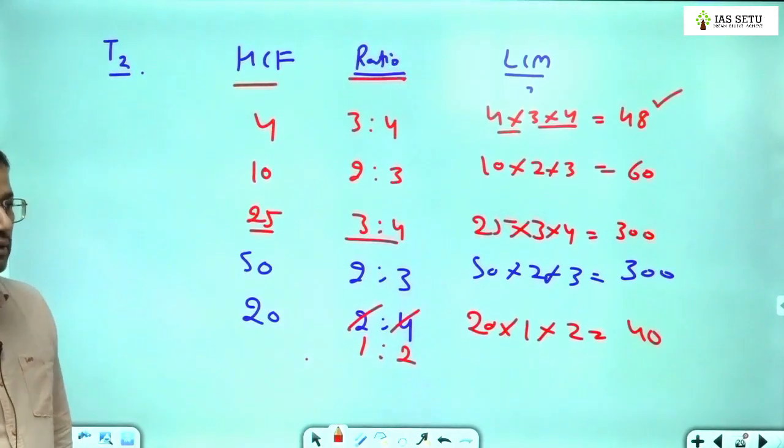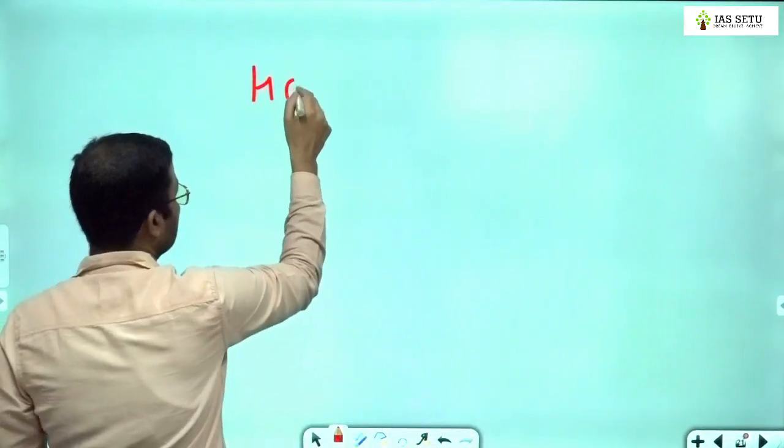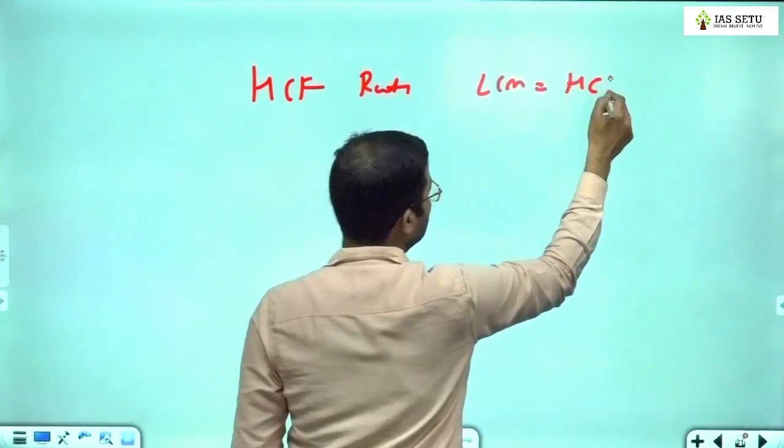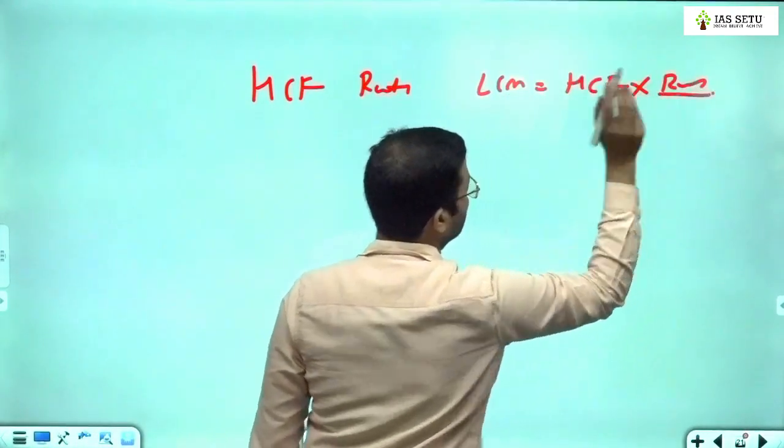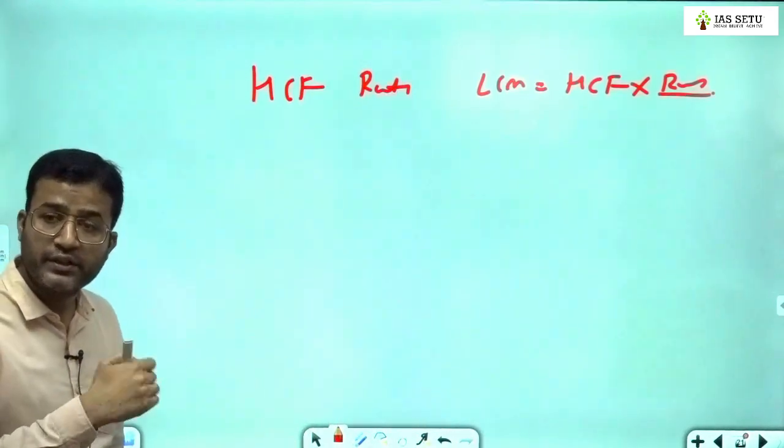So the point here is: HCF given, ratio given, LCM is asked - that will be HCF × multiplication of ratio. We can use it in reverse way also.